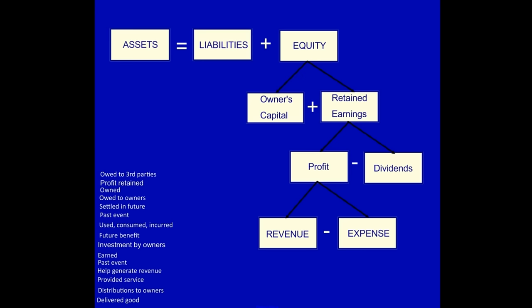We're going to figure out how the definition ties into this. I've got a random list of the definitions, and we're going to tie them in. 'Owed to third parties' — that is a liability. 'Profit retained' — profit which is kept in the business for future expansion — that's the definition of retained earnings.